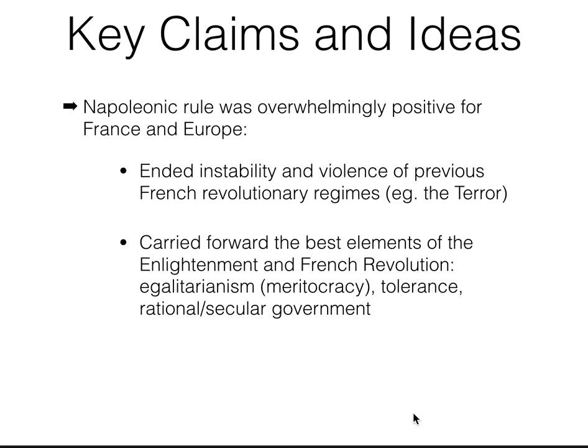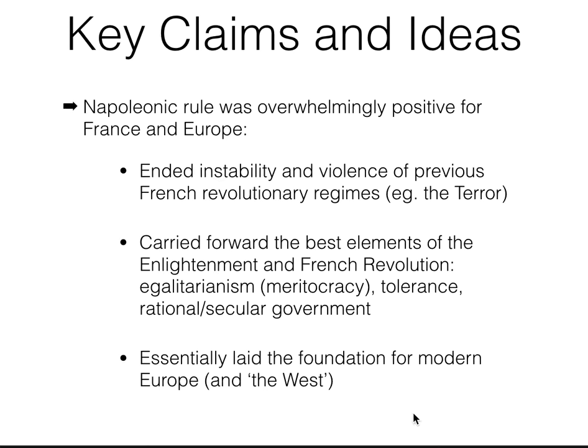He also suggests that Napoleon actually carried forward the best elements of the Enlightenment and the Revolution — not just rationalising it, but sifting out the most important things like egalitarianism, tolerance, and rational secular government, and taking those into his future government. So the sense is that he preserved and guaranteed the survival of the most important ideas of the French Revolution. In the process, Roberts claims he essentially laid the foundation for modern France, but also modern Europe, and even the basic idea of the West.